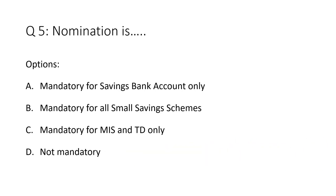Question 5: Nomination — Option A: mandatory for saving bank account only. Option B: mandatory for all small savings schemes. Option C: mandatory for MIS and TD only. Option D: not mandatory. The correct answer is Option B — mandatory for all small savings schemes.